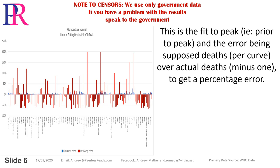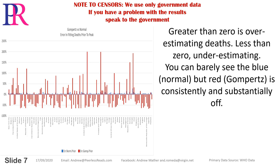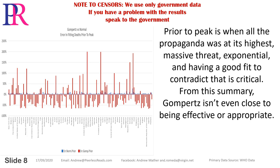This is the fit to peak, i.e. prior to peak, with the error being supposed deaths per curve over actual deaths minus 1 to get a percentage error. Greater than 0 is overestimating deaths, less than 0 is underestimating. You can barely see the blue normal, but red Gompertz is consistently and substantially off. Prior to peak is when all the propaganda was at its highest — massive threat, exponential — and having a good fit to contradict that is critical.